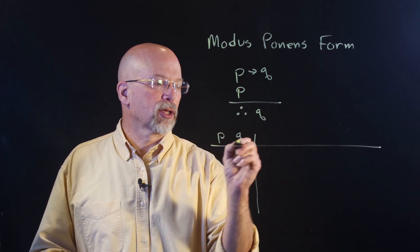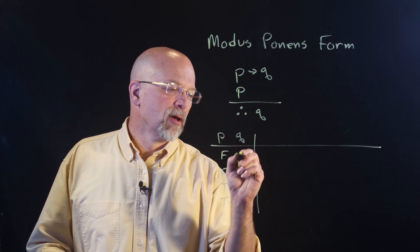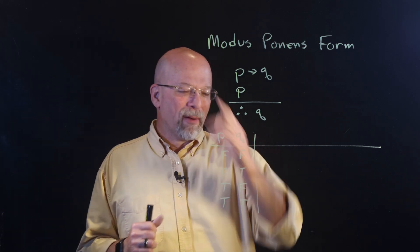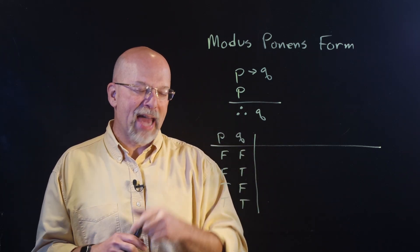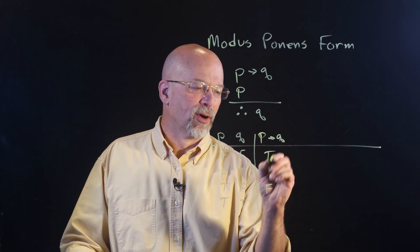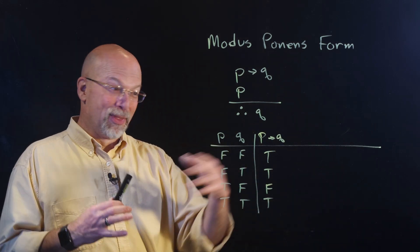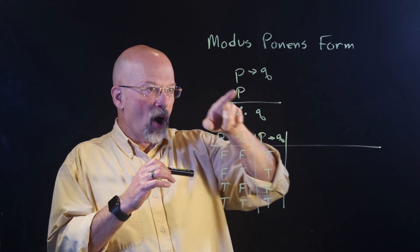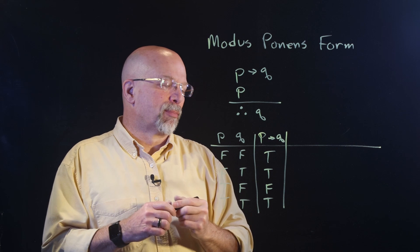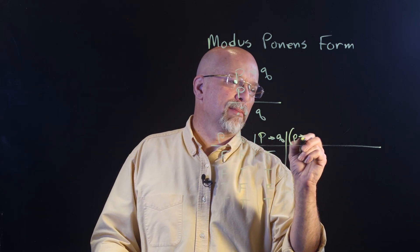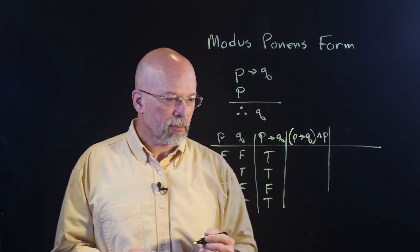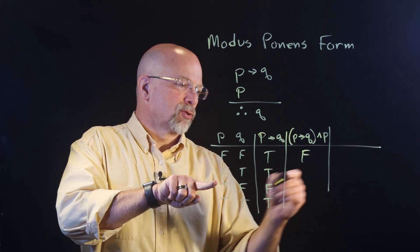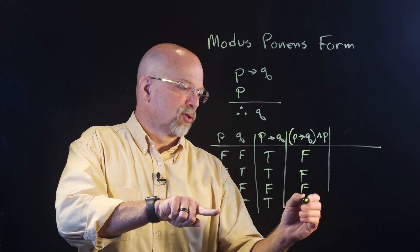You've seen the truth table before — P and Q with every possible combination of true and false. Going back to the dessert example: if you clean your plate, you'll get dessert. The case where you cleaned your plate but didn't get dessert is where P implies Q is false — your parent did not honor that implication. Now, P implies Q AND P: we AND those two columns together. False and true is false; false and true is false; true and false is false; true and true is true.